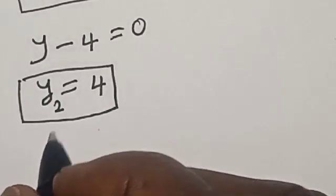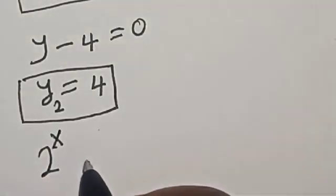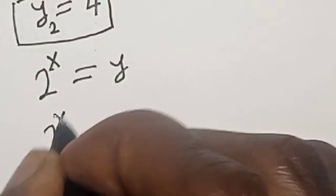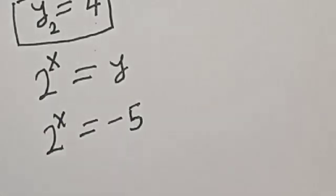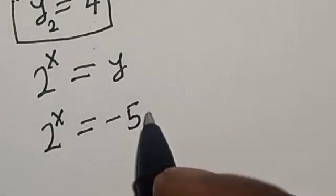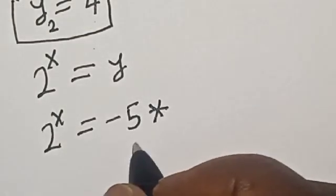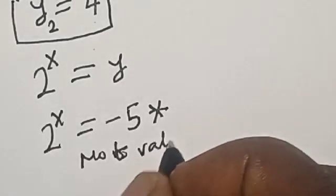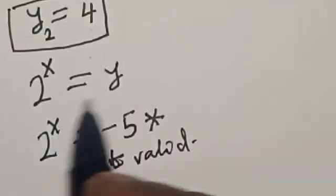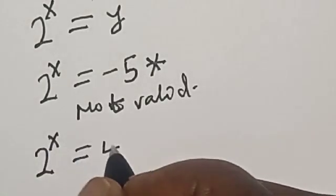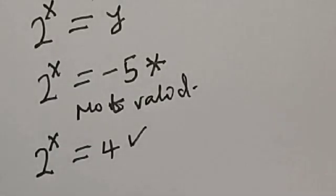But remember that 2 raised to power s is equal to y, and our y values are 4 and minus 5. For y = -5: 2 raised to power s cannot equal negative 5, since an exponential function cannot equal a negative number — so we reject this as a false, not valid statement. For the second case, 2 raised to power s is equal to 4, which is a valid statement.